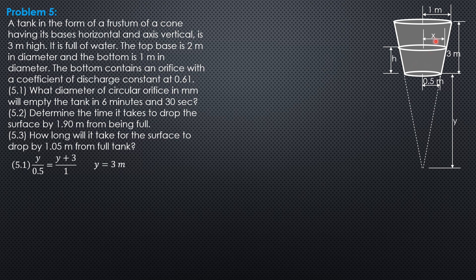Then let's express X in terms of the head. X as to H plus Y, which is 3, equals 0.5 as to 3. So that means X is 1/6 of H plus 3. X squared therefore is 1 over 36 of quantity H squared plus 6H plus 9.